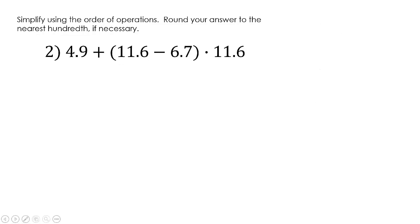Simplify using the order of operations. Round your answer to the nearest hundredth if necessary. In this one, we know that we have to do what's in parentheses first. So let's do that on the side. We have 11.6 minus 6.7. I tried to line up my decimals. Let's subtract. I can't take six minus seven, so I have to borrow. 16 minus seven is nine. Bring down my decimal. I can't take zero minus six, so I have to borrow again. 10 minus six is four. So let's put that in there.